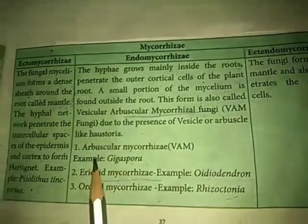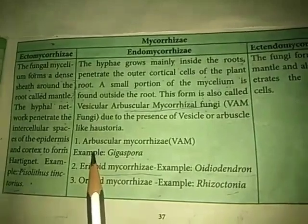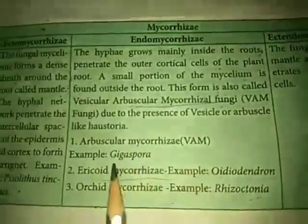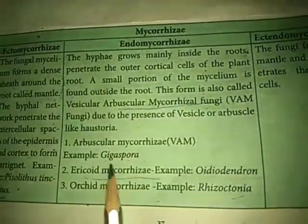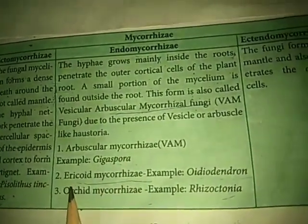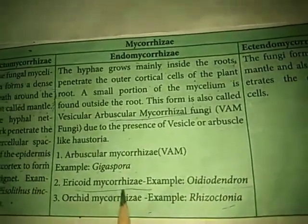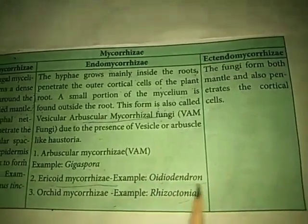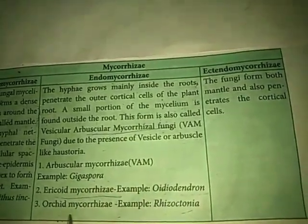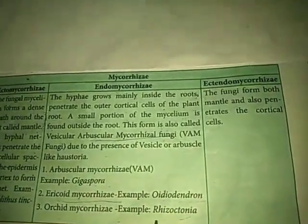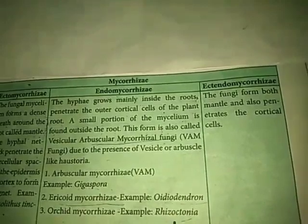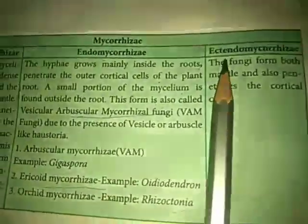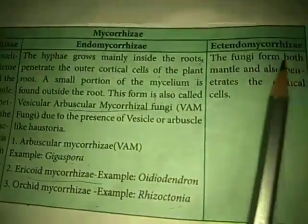Three subtypes of endomycorrhizae are present: arbuscular mycorrhizae (VAM), for example Glomus; ericoid mycorrhizae, for example Oidiodendron; and orchid mycorrhizae, for example Rhizoctonia. The third main type is ectendomycorrhizae, where the fungi form both a mantle and also penetrate the cortical cells.